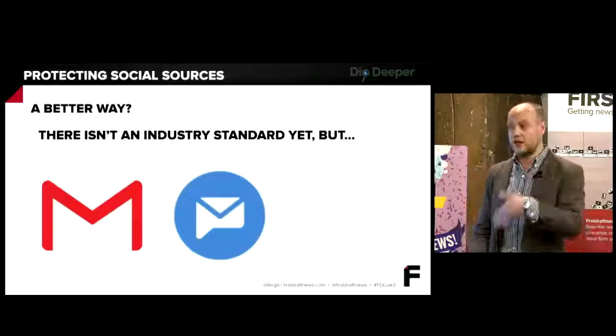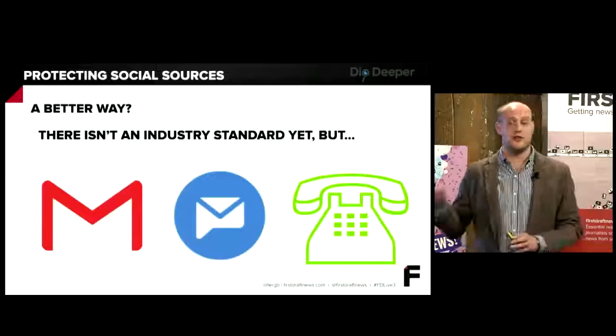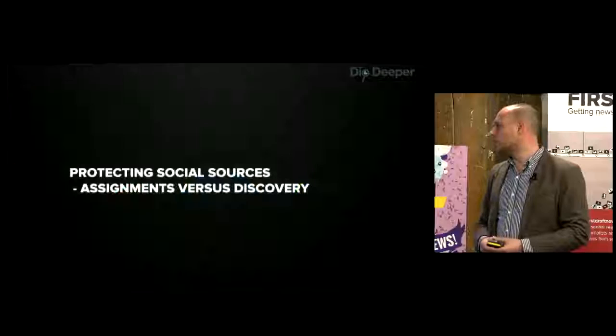Is there a better way? There isn't an industry standard, but there are some things we can do. You don't have to add to that barrage of tweets — work at other ways you might be able to communicate with them. Email is a little less intense. Direct messages allow you to put a lot more into them than an app reply. And it's not that difficult to find out people's phone numbers, as long as you also consider the appropriate time to contact them.